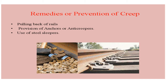Another remedy is the provision of anchors or anti-creepers, which can prevent creep. If there is a creep of 7.5 cm to 15 cm, around 4 anchors per rail are used per month. If there is a creep of around 22.5 cm to 25 cm, around 6 anchors per rail are used in Indian practice. These anchors are fastened to the foot of the rail and kept in perfect contact with the sleeper to reduce creep. We can also use steel sleepers, which are much more stable and can reduce the longitudinal movement of rail.